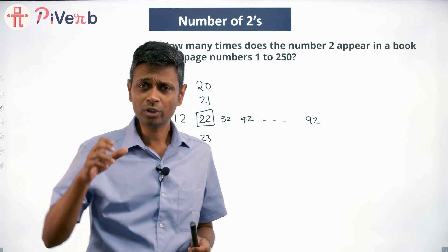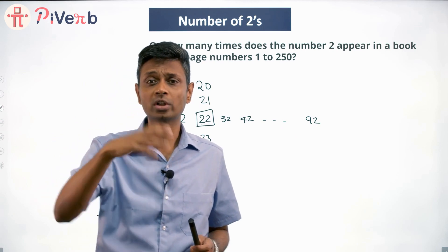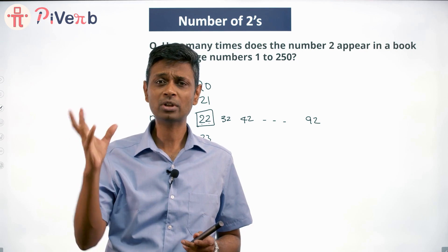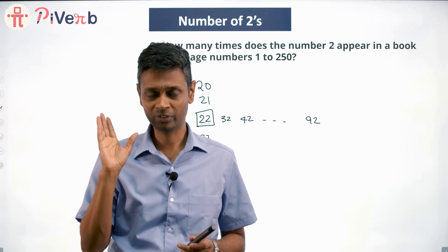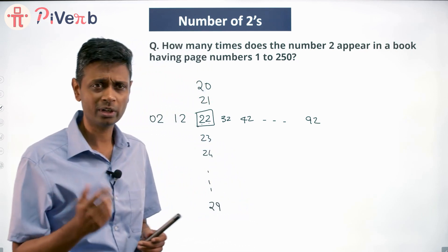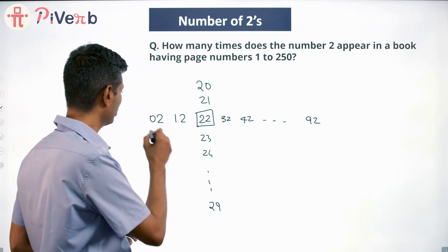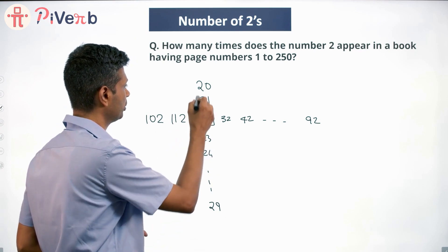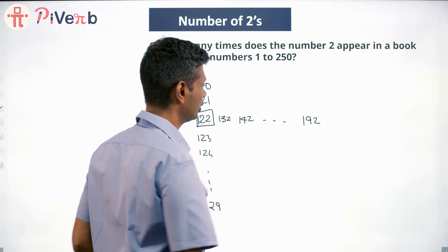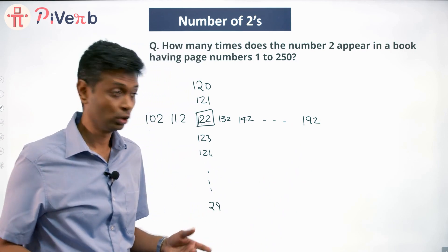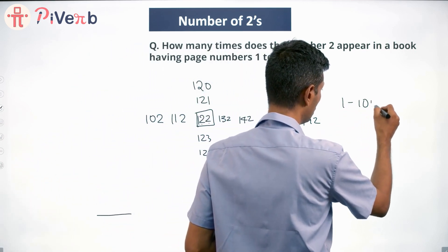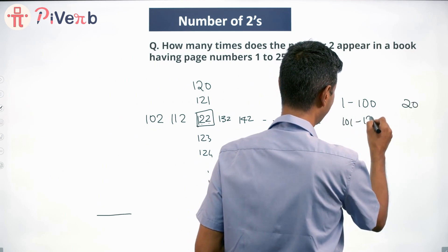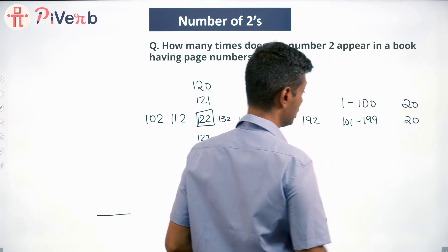If we go from 101 to 199, I'm going to think about 101 to 199. All I'm just putting is 102, 112, 122, 123, 124, 121, 132, 142, all the way to 192 - exactly same set. So from 1 to 100, 2 appears 20 times. From 101 to 199, 2 appears 20 times.